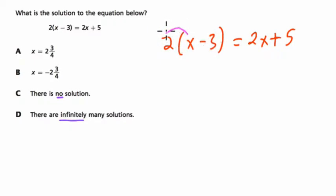So it's 2 times x and 2 times 3. That's 2x minus 6. 2 times 3 is 6. And over here we have 2x plus 5.